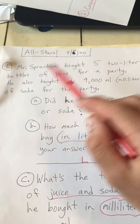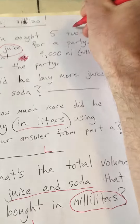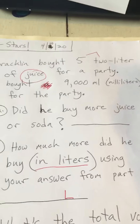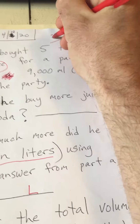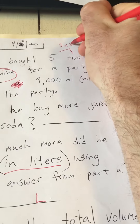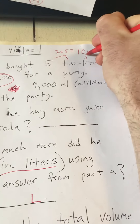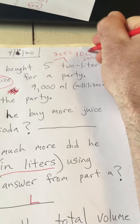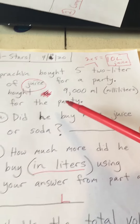Mr. Spracklin bought five two-liter bottles of juice — so five two-liters. If I had a two-liter times five, two times five is ten liters of juice. Each of those five bottles has two liters, so five times two equals ten liters of juice.